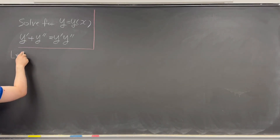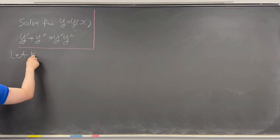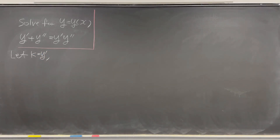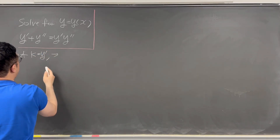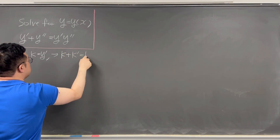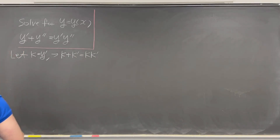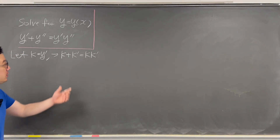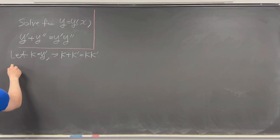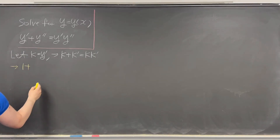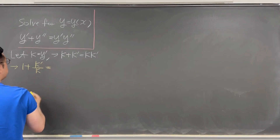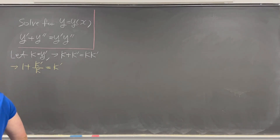I'll call k = y'. Then the equation becomes k + k' = k · k'. We can divide both sides by k, giving us 1 + k'/k = k'.